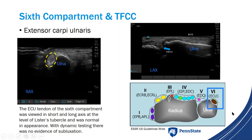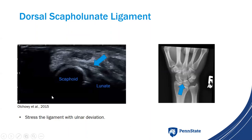The last structure to evaluate is the dorsal scapholunate ligament — connecting the scaphoid and lunate. X-ray images give us a reference point for where to look. To stress the ligament with ultrasound, you can have the patient perform ulnar deviation or do it for them passively. If the ligament is injured, you may see increased laxity during ulnar deviation stress testing.